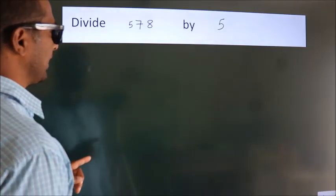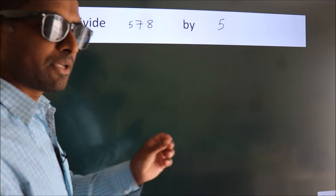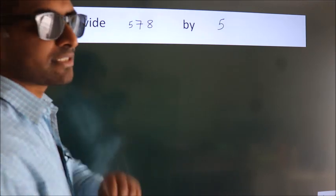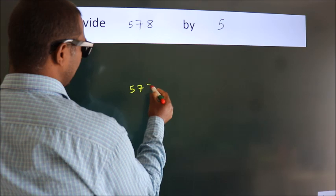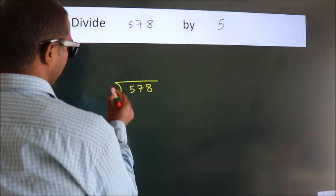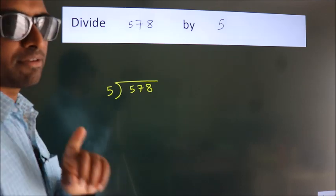Divide 578 by 5. To do this division, we should frame it in this way: 578 here, 5 here. This is your step 1.